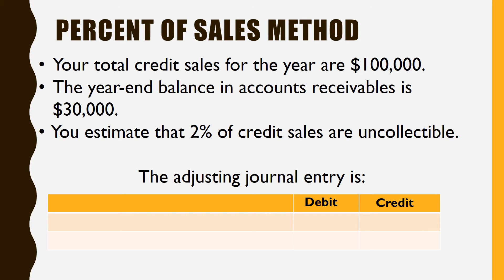There are a couple of ways to estimate uncollectible accounts. We're going to do the easiest one, called percent of sales. Let's assume your total credit sales are a hundred thousand dollars, the year-end balance in accounts receivable is thirty thousand, and you estimate that two percent of your sales are uncollectible. Since we're basing our estimate on sales, we don't care about that accounts receivable balance. Our journal entry requires us to debit an expense account — two percent of a hundred thousand is two thousand. The idea is to expense bad debts in the year of the sale, not wait until they actually go bad.